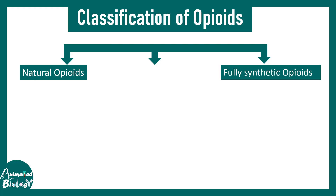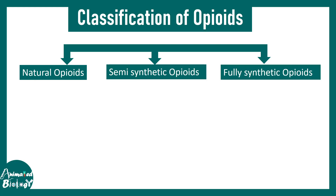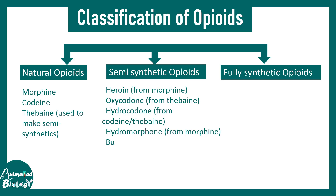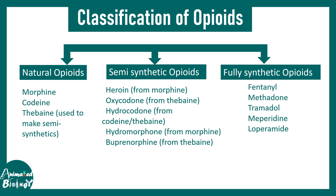There are natural opioids, fully synthetic opioids, and in between there are semi-synthetic opioids. Natural opioids include morphine, codeine, and thebaine. Semi-synthetic opioids include heroin, oxycodone, hydrocodone, hydromorphone, and buprenorphine. And there are synthetic opioids like fentanyl, methadone, tramadol, meperidine, loperamide, etc.